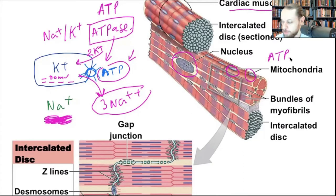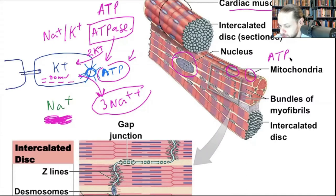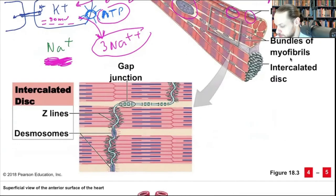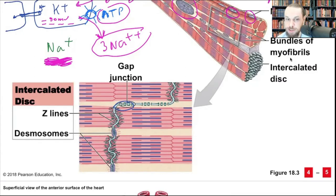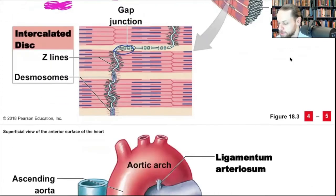Once ions are inside the cell, they can pass from cell to cell via gap junctions, which are part of the intercalated discs. Sodium or calcium can propagate from one cell to another. The desmosomes anchor the cells together while the gap junctions act as electrical windows that move ions across cells.